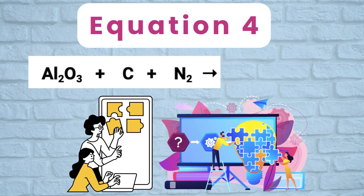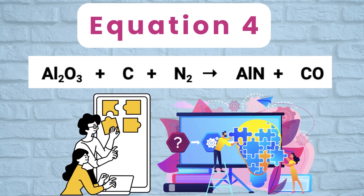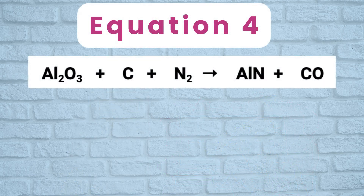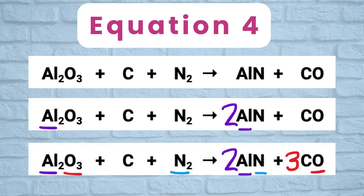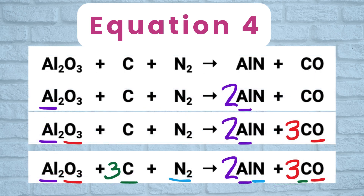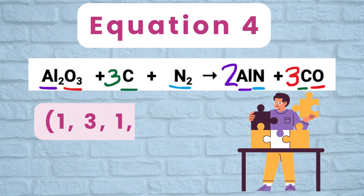Equation 4: Al2O3 plus C plus N2 gives AlN plus CO. Carbon is already balanced at the moment. Balance aluminum by putting a coefficient of 2 in front of AlN, so both aluminum and carbon are balanced for now. This makes nitrogen 2 on both sides as well. We have 3 oxygen on the left and only 1 on the right, so put a coefficient of 3 in front of CO. Oxygen is now 3 on both sides, but carbon on the right is now 3 with only 1 on the left. Put a coefficient of 3 in front of C on the left. Now all atoms are balanced; coefficients are 1, 3, 1, 2, 3.